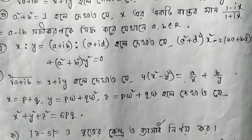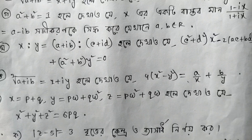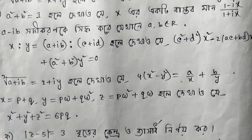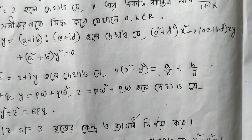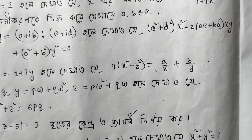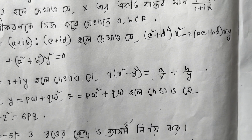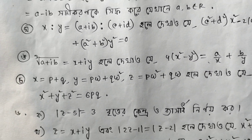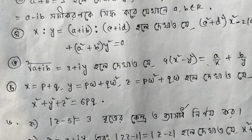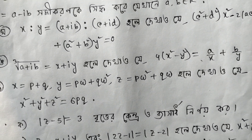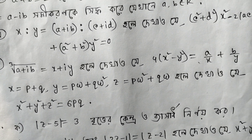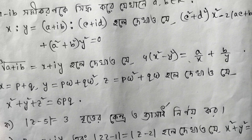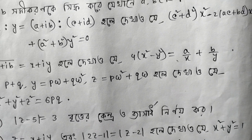Problem: If a + ib is the sum of x + iy, show that x² - y² equals a, and x/a + b/y gives the next part. Then: let x = p + q, y = p·ω + q·ω², z = p·ω² + q·ω.